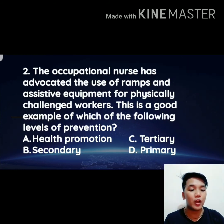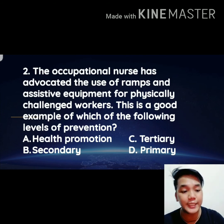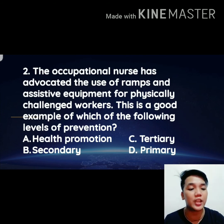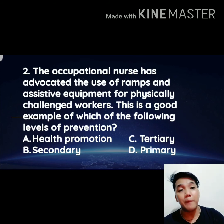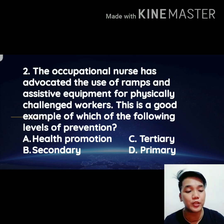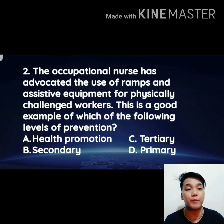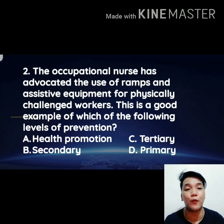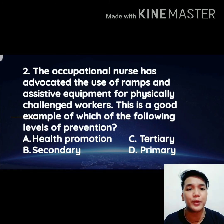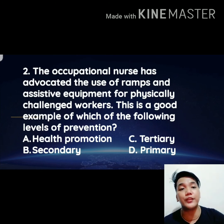Number two: the occupational nurse advocating the use of ramps and assistive equipment for physically challenged workers. Since this involves the use of assistive devices, it is a form of rehabilitation. The correct answer is letter C, tertiary level of prevention.